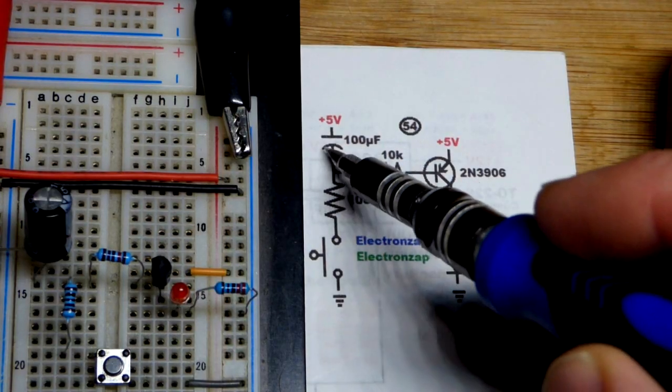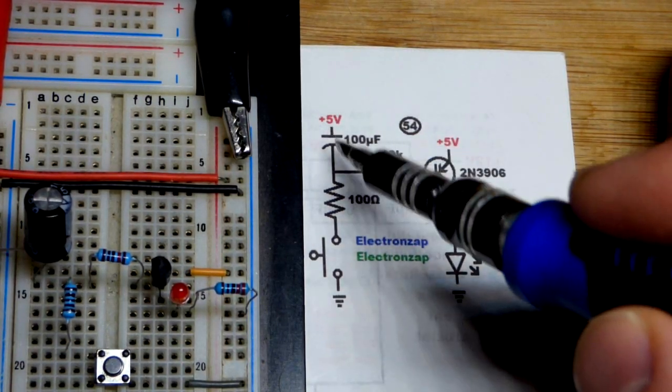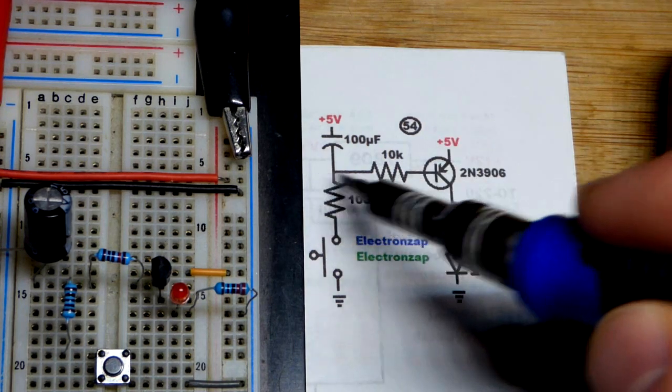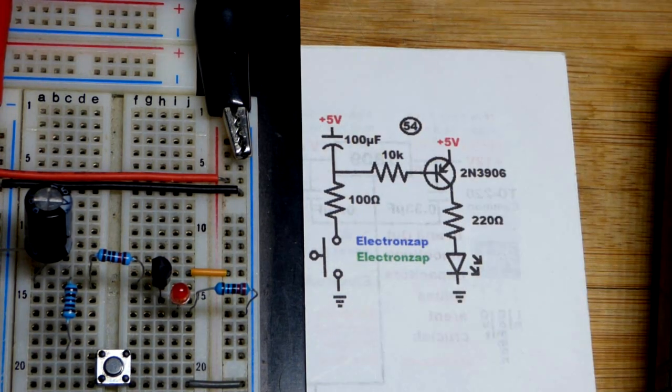Charge the capacitor, this side is more negative. That side is more positive. That's the voltage difference across there that can push the current through the 10K resistor.